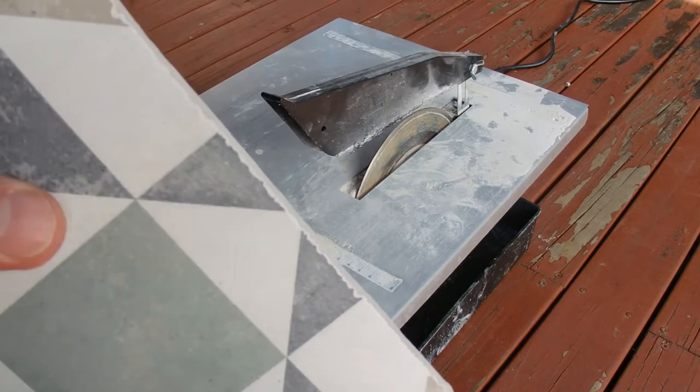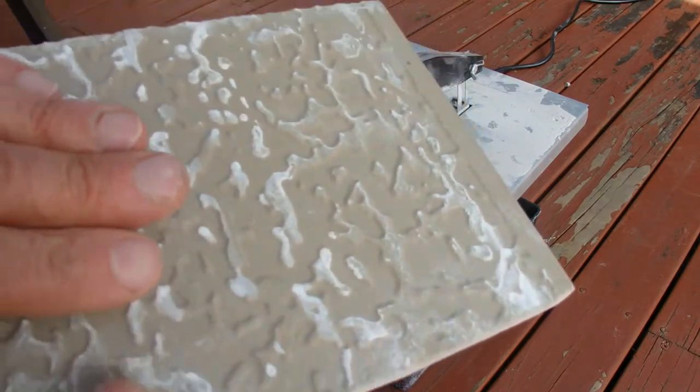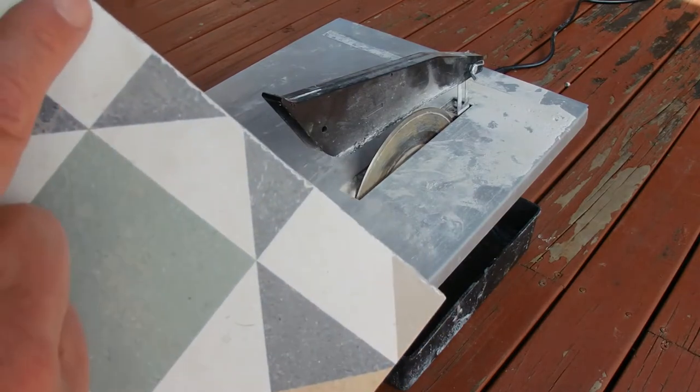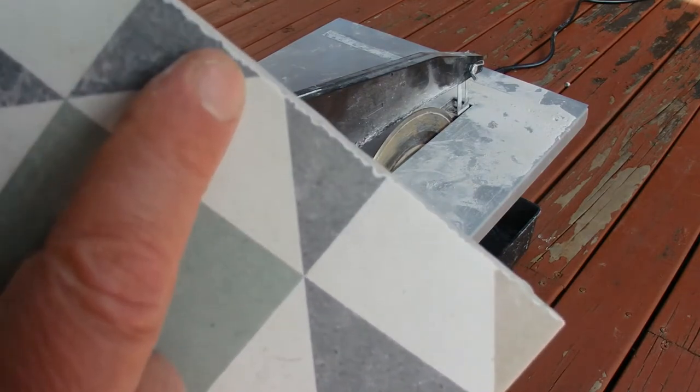Recently I had to cut some porcelain tiles—there's a porcelain tile there at the back—and on the edge where I cut it, there'd always be these little chips out of the front of the tile when I was cutting it.